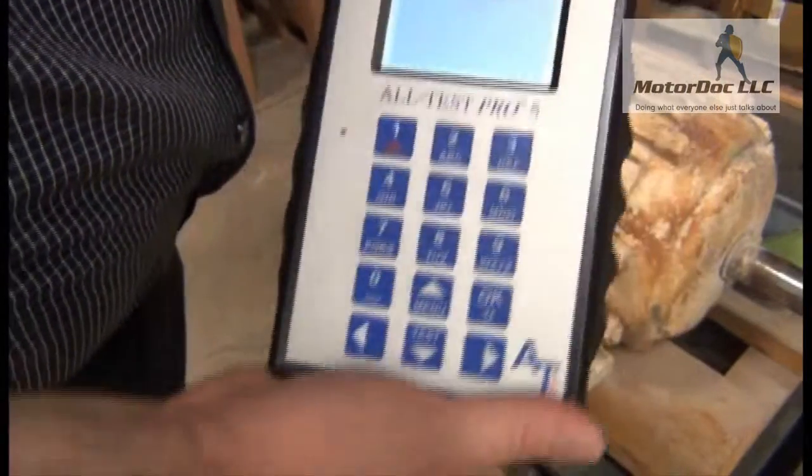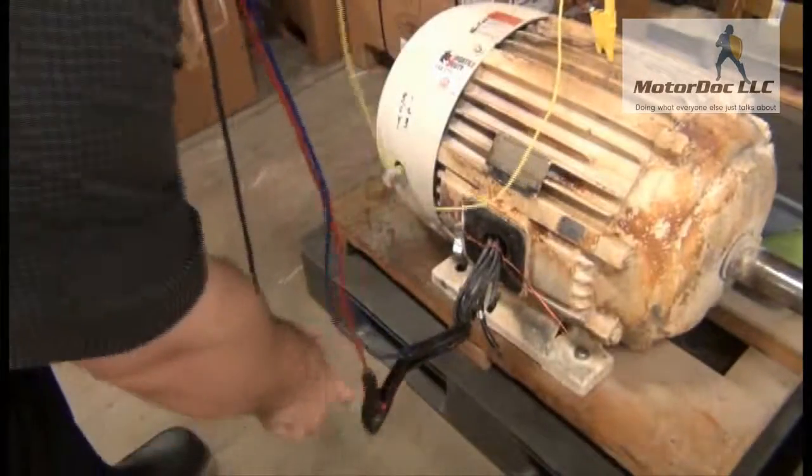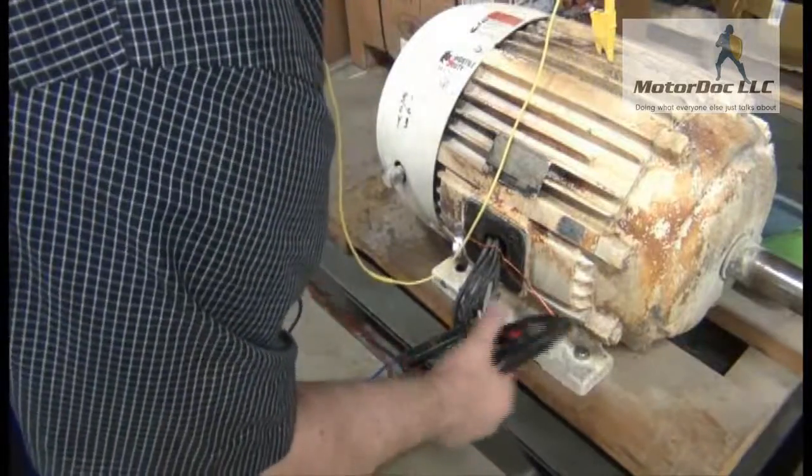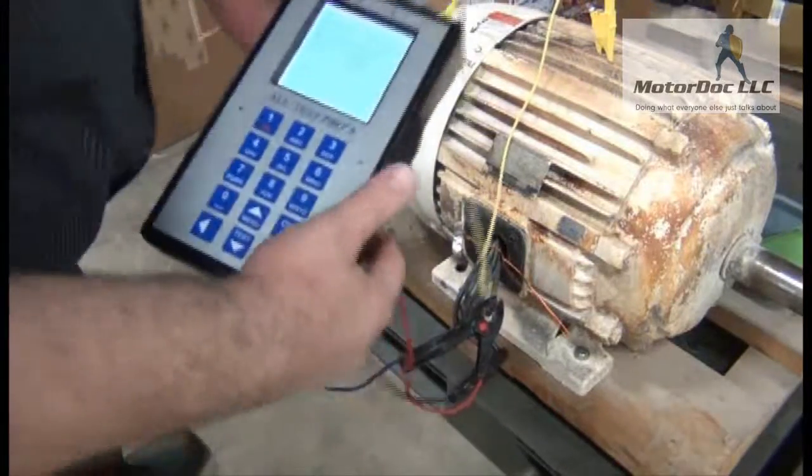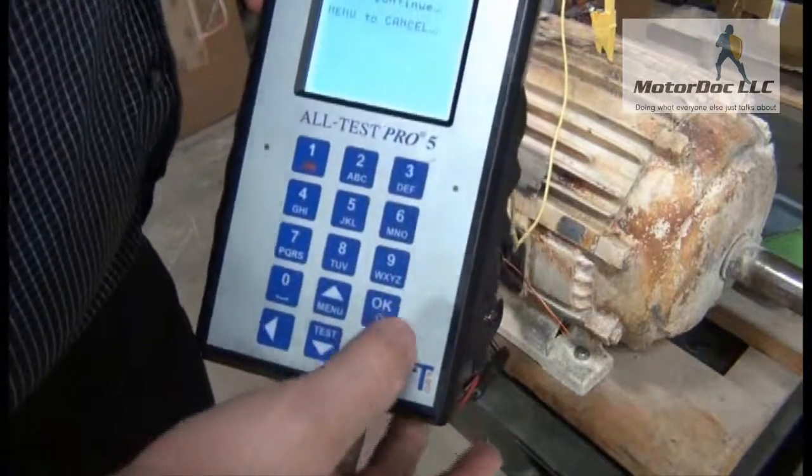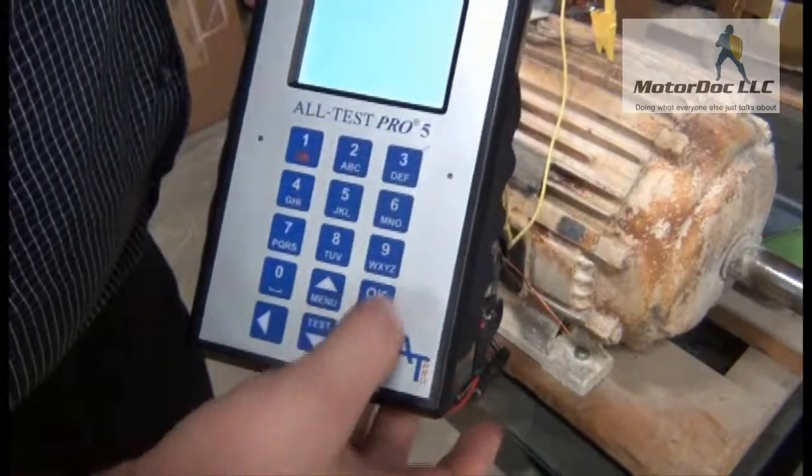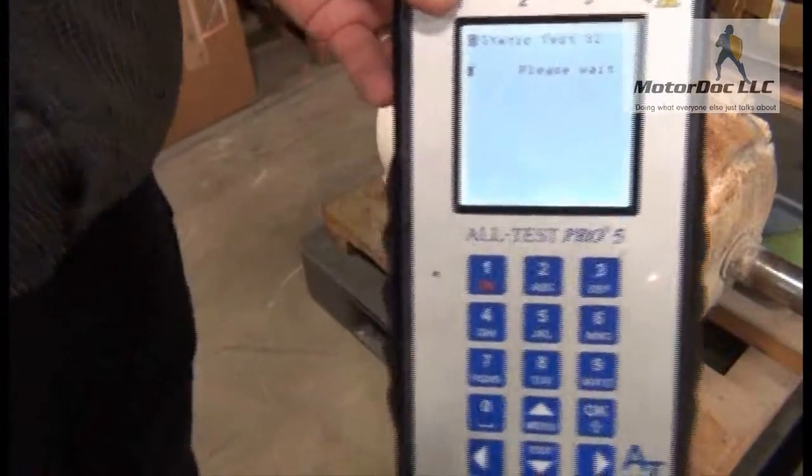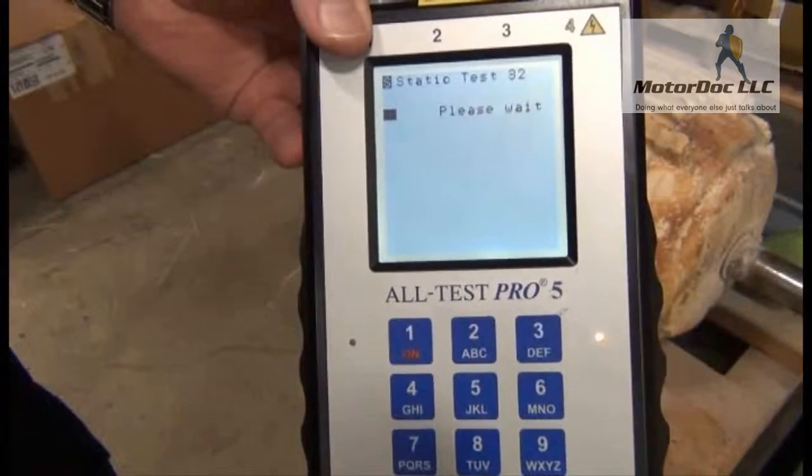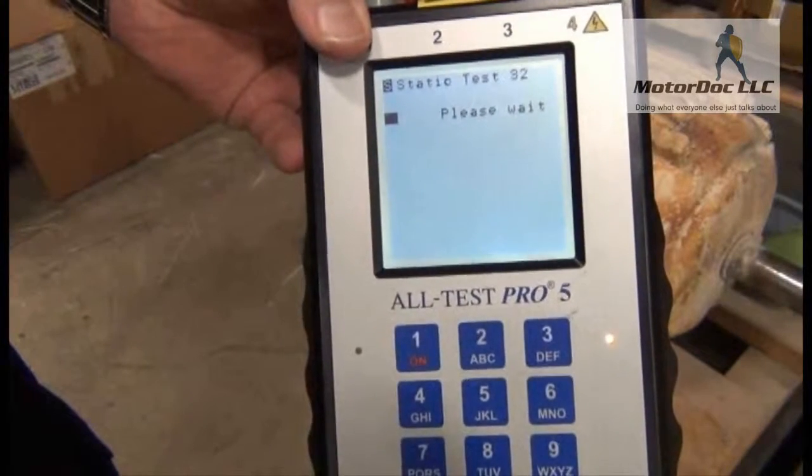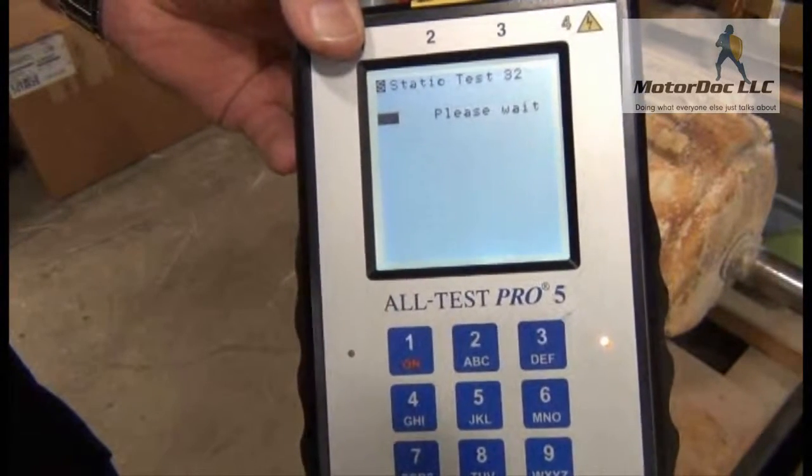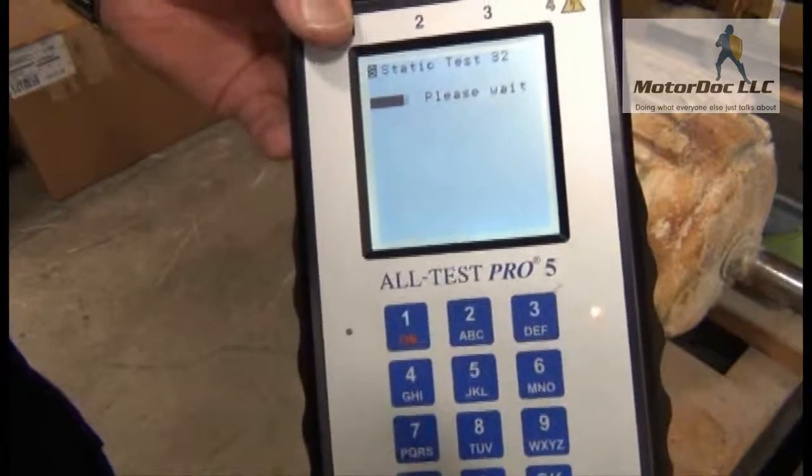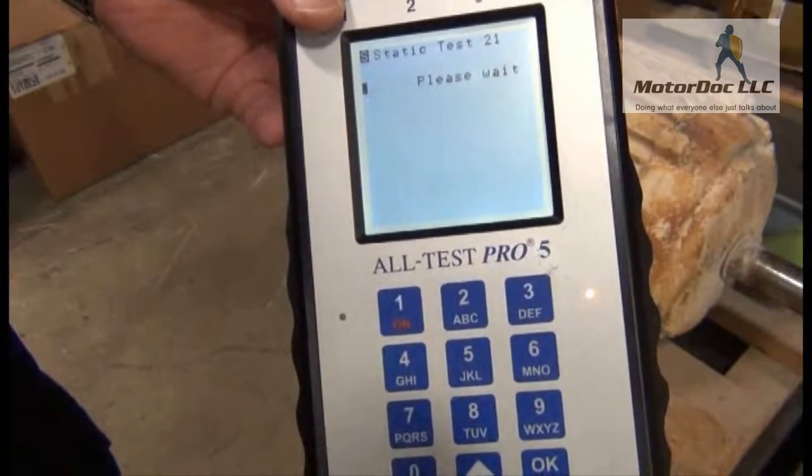Now, it asks me to connect the other two leads. Which I do here. So I press OK to continue. Now it's going to perform the static tests, which I just basically wait for. And compared to a much larger machine, smaller machines tend to go much faster on any of the static tests.